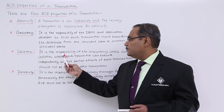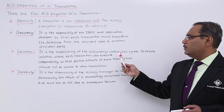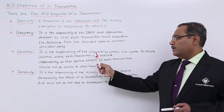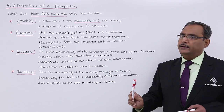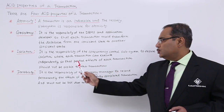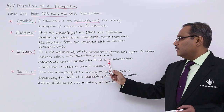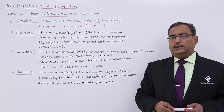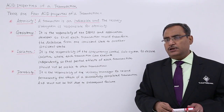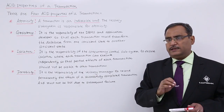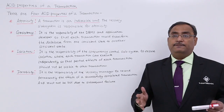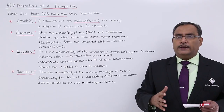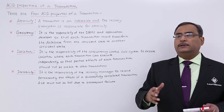It is the responsibility of the concurrency control subsystem to ensure isolation, where each transaction can execute independently. The partial effects of each transaction should not be visible to the other transactions. Each and every transaction will leave its individual effect onto the database as if that transaction was working in solo, not in parallel, not simultaneously with other transactions.